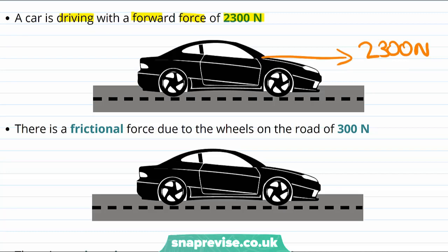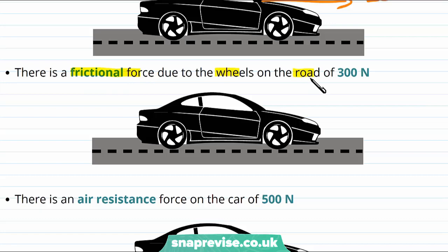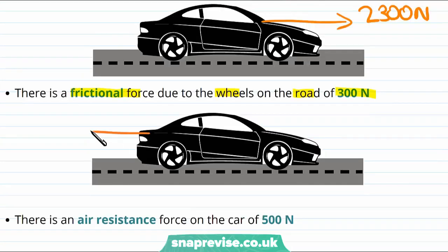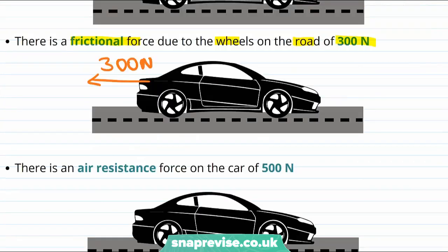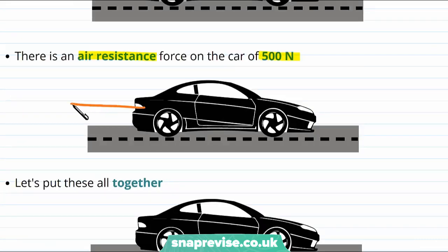Now let's think about what other forces might be acting on this car. There's going to be a frictional force due to the wheels on the road, and we can imagine that this would be about 300 newtons. And just like the tennis ball falling to the ground, the car will feel a force of air resistance of 500 newtons.